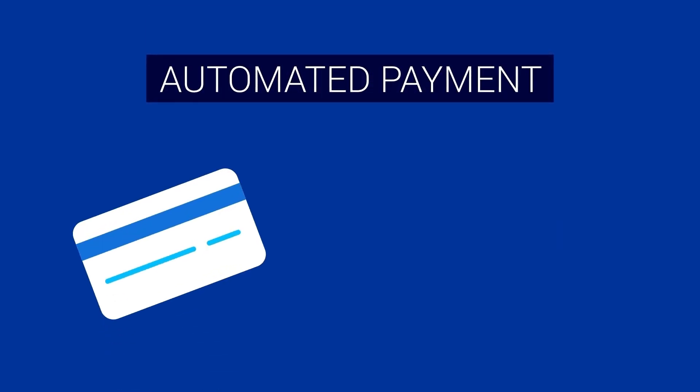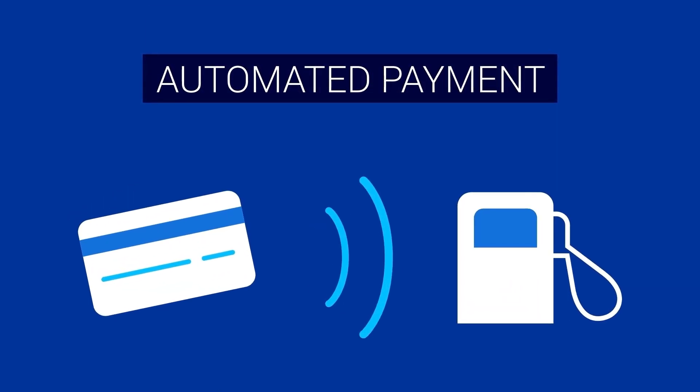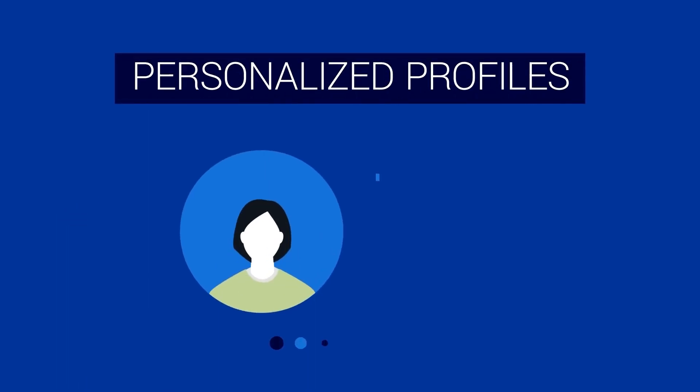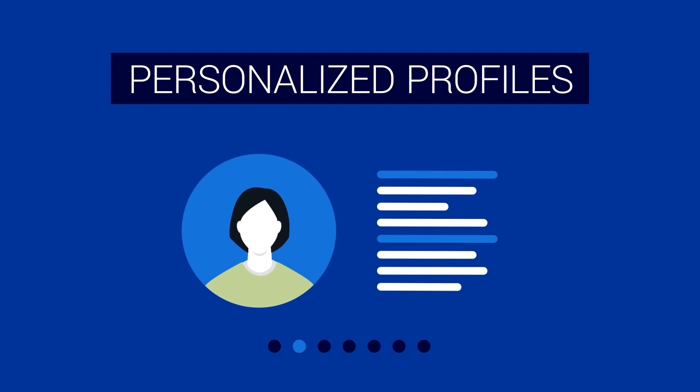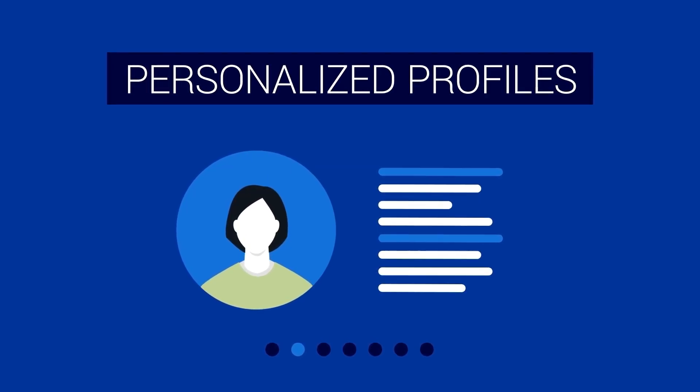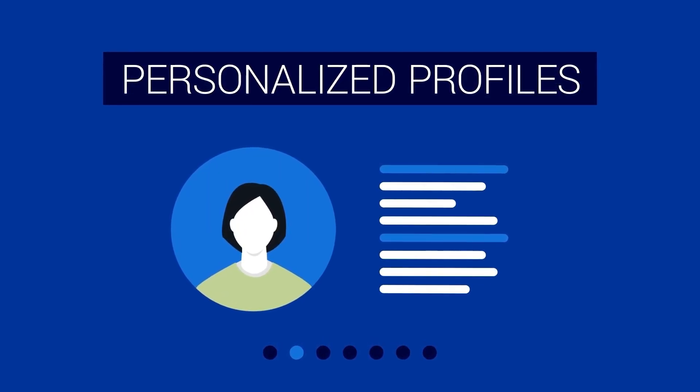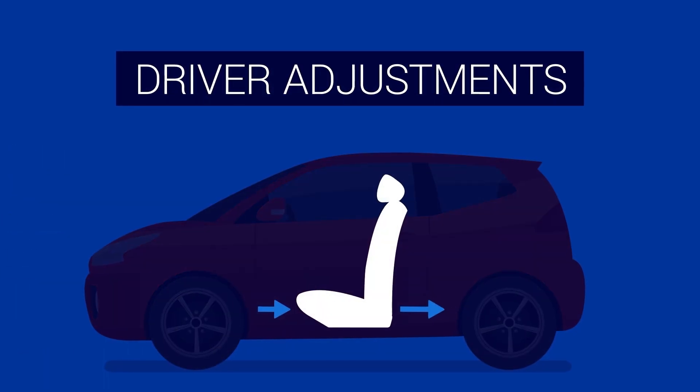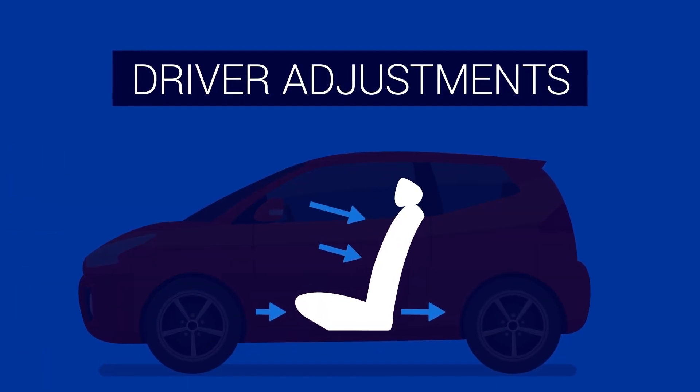Future features enabled by SDVs include automated payment for vehicle-related services such as tolls and fuel, personalized profiles that follow the driver from car to car and trip to trip, even across car rentals or car shares, and cars that can automatically adjust the seats for an active driver or a passive self-driving arrangement.